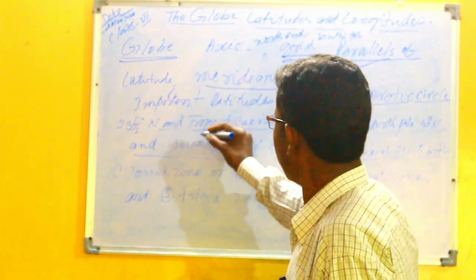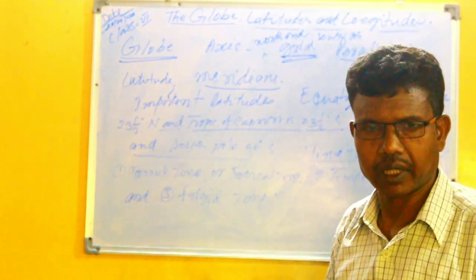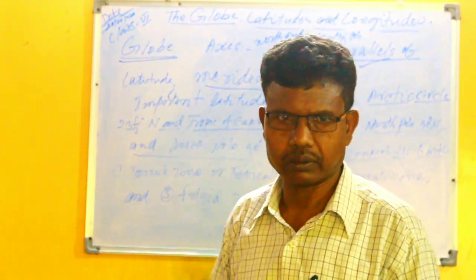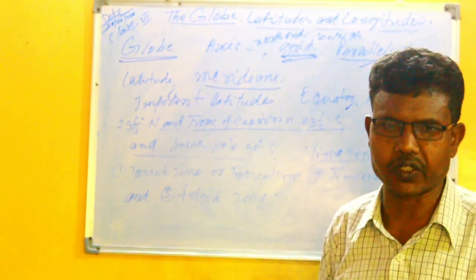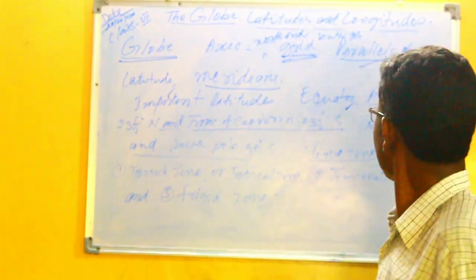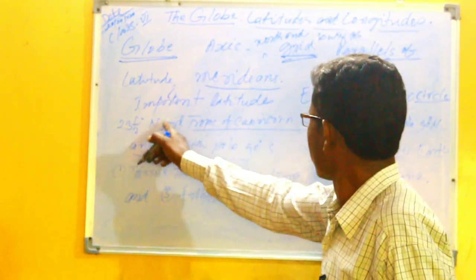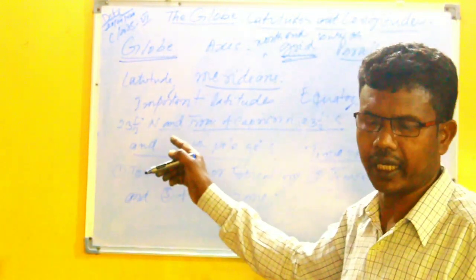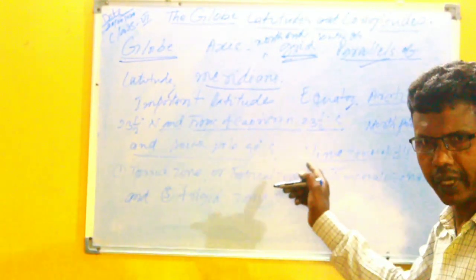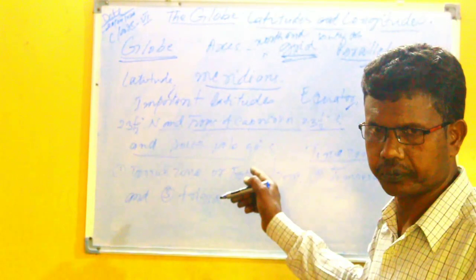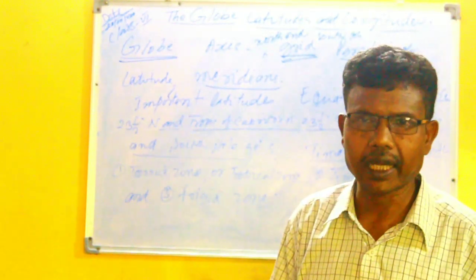First, let us see about the equator. It is the greatest circle on the globe which divides the whole Earth into two equal parts, and the other circles are smaller ones. The Tropic of Cancer is at 23 and a half degrees north latitude, and the Tropic of Capricorn is at 23 and a half degrees south latitude. These are the two points up to which the direct rays of the sun travel.